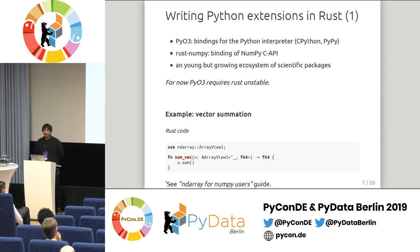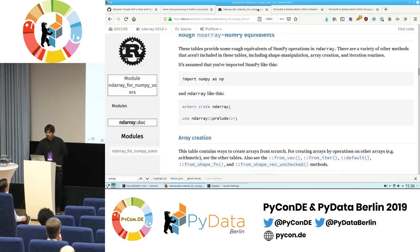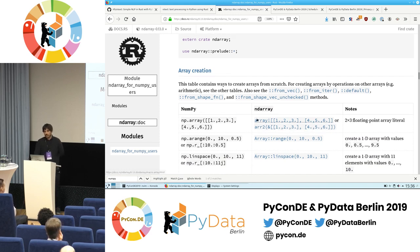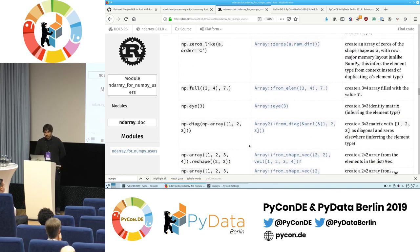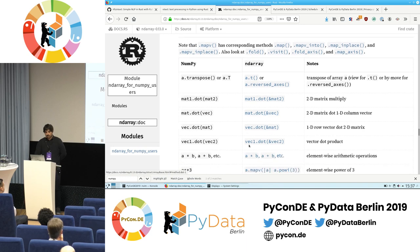Let's do a simple example — summing a vector. We take a view into an array of float64 and apply the sum operator from the ndarray library. ndarray is like the NumPy equivalent for Rust. The people who wrote it also have a convenient mapping of NumPy functions to ndarray equivalents, so you can map array creation, slicing, and basic mathematical operations from one to the other.